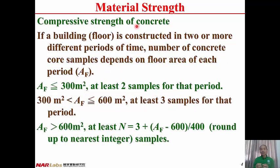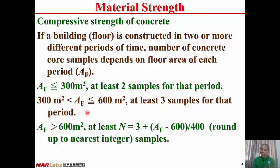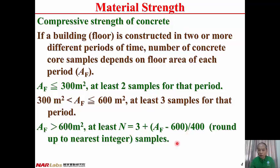A building may be constructed in two or more different periods of time, and the number of concrete core samples depends on the floor area of each period. If the floor area is less than or equal to 300 square meters for that period, at least two samples are needed. If between 300 and 600 square meters, at least three samples. If larger than 600 square meters, at least N samples, where N equals 3 plus (AF minus 600) divided by 400, rounded up to the nearest integer.